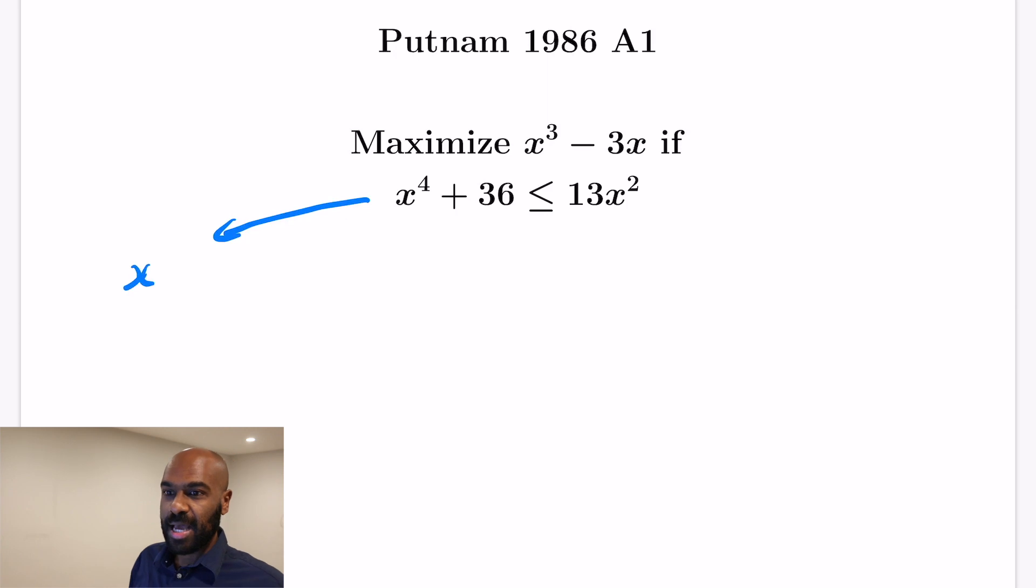Okay, so let's go ahead and actually do this. Rearranging we get x⁴ - 13x² + 36 ≤ 0.